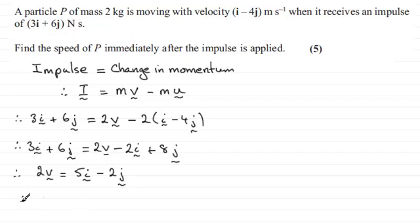And if we now divide both sides by 2, the final velocity v is equal to 5 over 2i, or 2.5i, minus j.